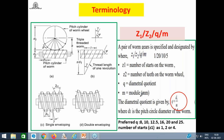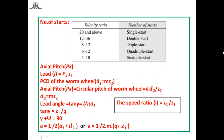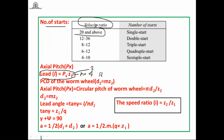The axial pitch px is measured from one point on a thread to the adjacent corresponding point, measured along the axis. Lead = px × Z1. For a single start thread, Z1=1, so lead equals px. For a multi-start (Z1=2), lead is twice the axial pitch. The pcd of the worm wheel is d2 = m × Z2.